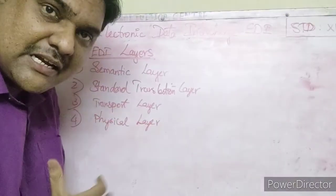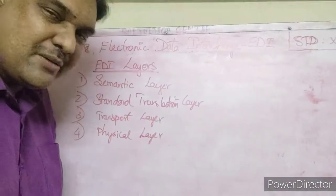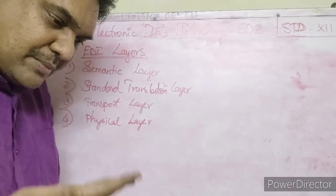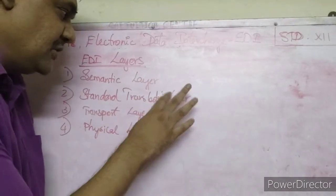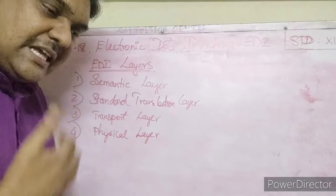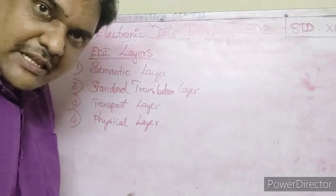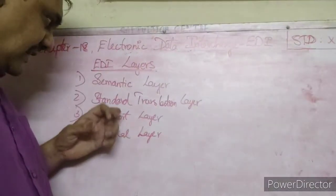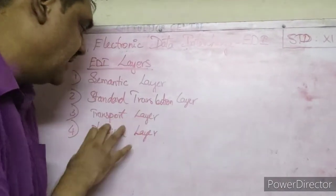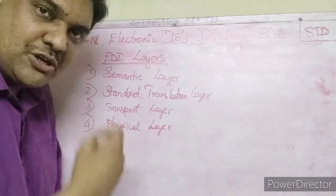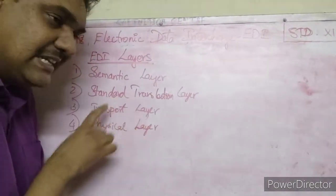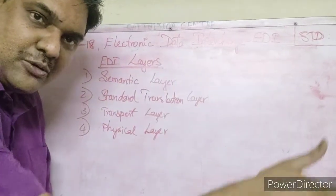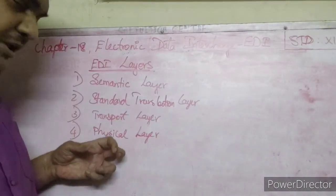The Semantic Layer is the application layer — it is where the business document is identified and formatted in computer order. The Standard Translation Layer translates the ordinary document into the EDI format. The Transport Layer establishes a connection between your computer and the partner's computer. The Physical Layer — cables, satellite, or mobile connection — is where the actual data is physically transferred.